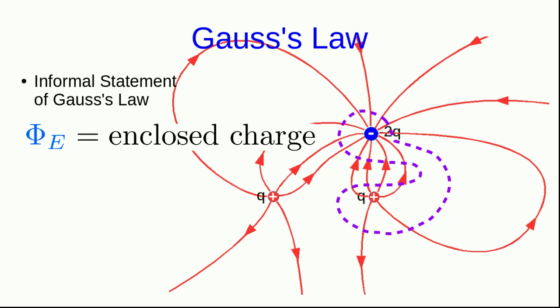What we've just seen and used to solve a simple problem is an informal statement of Gauss's law. Basically, our current statement is that the flux through a closed surface is equal, or at least proportional, to the enclosed charge inside the surface.